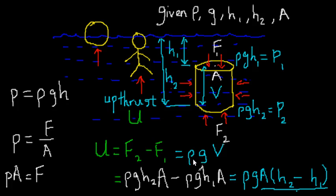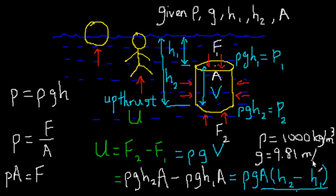Which means that if I know the density of the water, the acceleration due to gravity, and the volume of the cylinder, then I can just multiply them together and get the upthrust. The density of water is 1000 kg per meter cubed, and g is 9.81 meters per second squared.